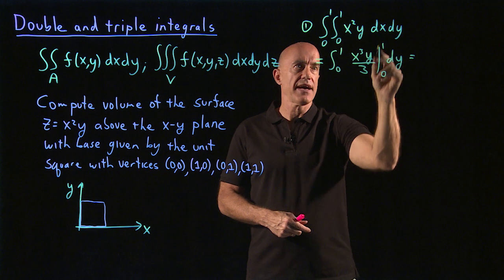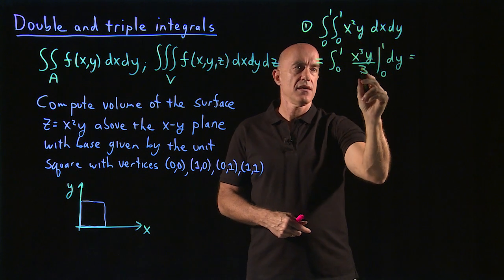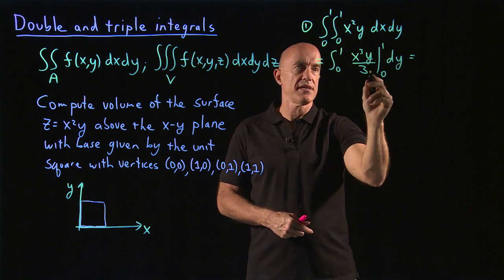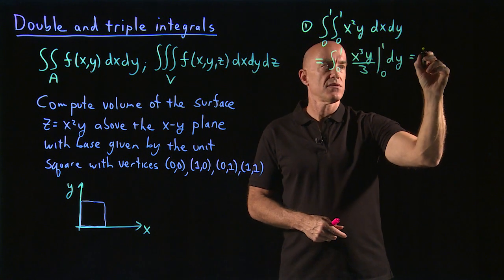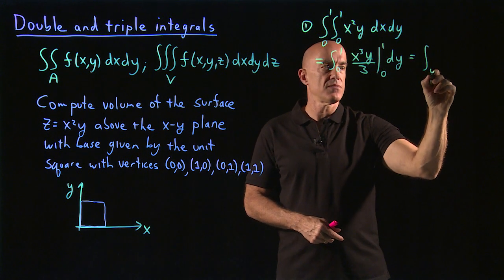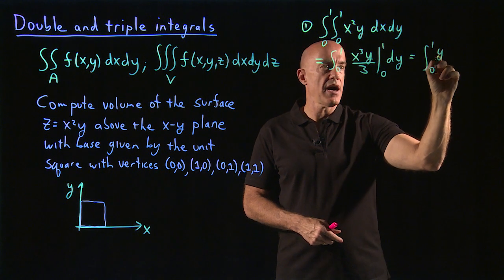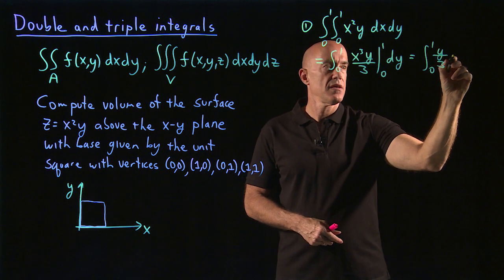So this is the value of x now. We integrated x. So the lower limit will be 0. The upper limit will give us y over 3. So this will be an integral from 0 to 1, y over 3 dy.